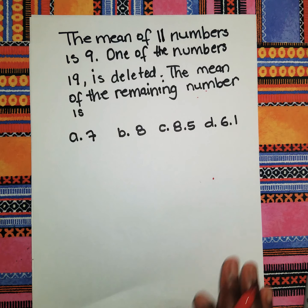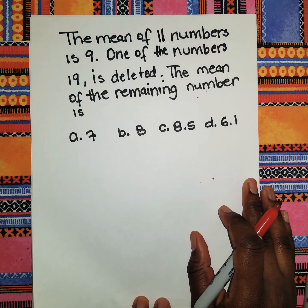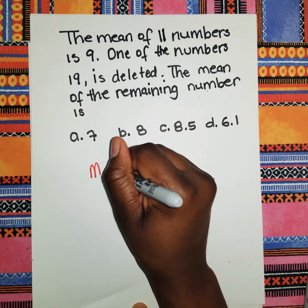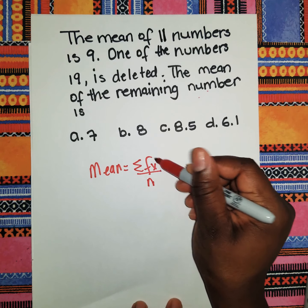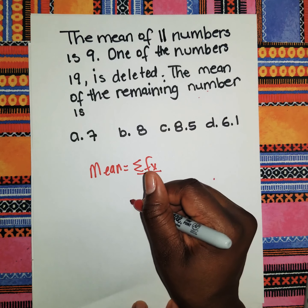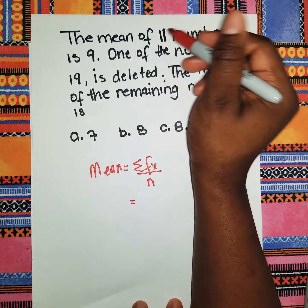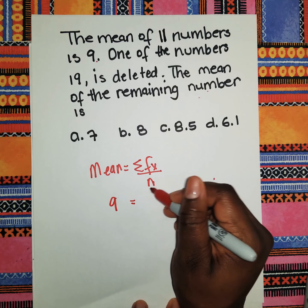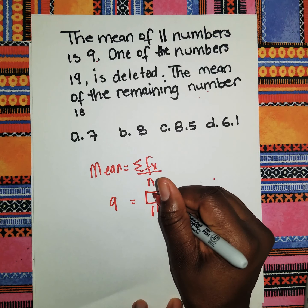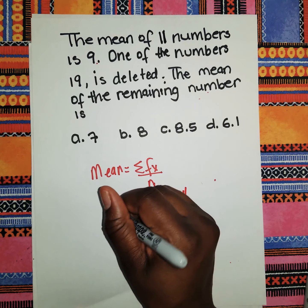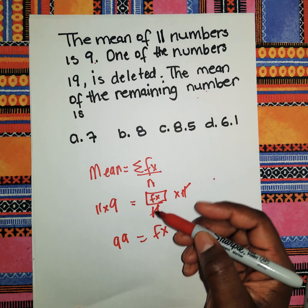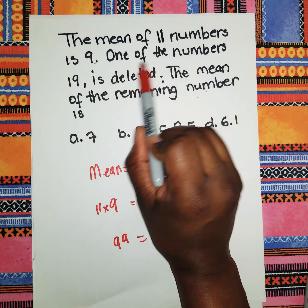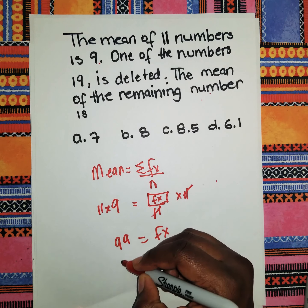Moving on: the mean of 11 numbers is 9; one of the numbers — 19 — is deleted. We need to find the mean of the remaining numbers. Mean = sum of all values ÷ n. With mean = 9 and n = 11, the total sum is 9 × 11 = 99.